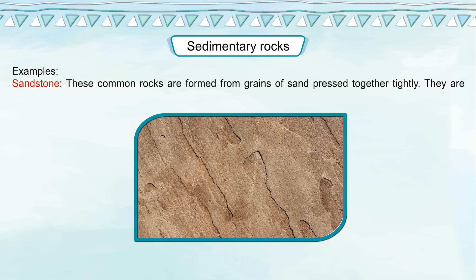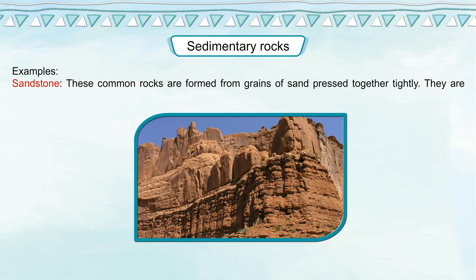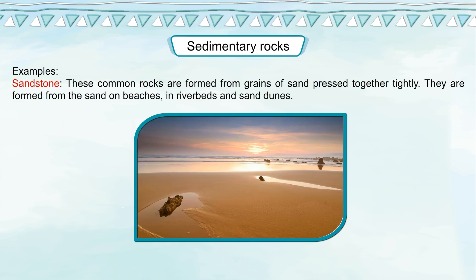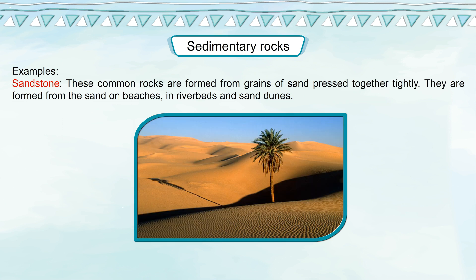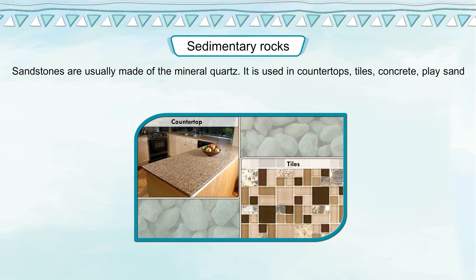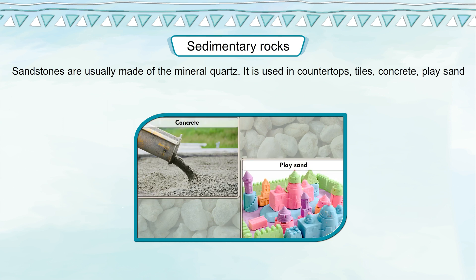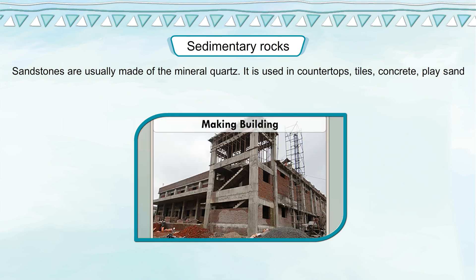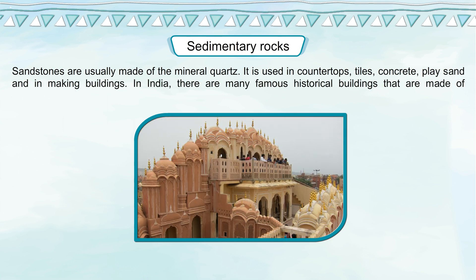Sandstone: These common rocks are formed from grains of sand pressed together tightly. They are formed from the sand on beaches, in riverbeds, and sand dunes. Sandstones are usually made of the mineral quartz. Sandstone is used in countertops, tiles, concrete, play sand, and in making buildings.